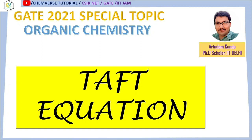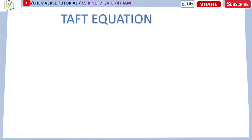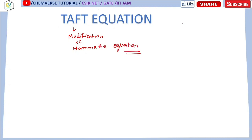This Taft equation can be thought of as quite a modification of the Hammett equation. It is basically the modification of the Hammett equation. I hope you have already got a clear-cut idea about the Hammett equation and you know what the reference reaction was there.